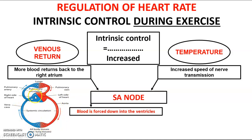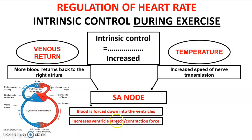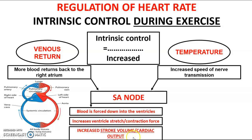To summarise: increased venous return means more blood returns to the right atrium; this increases the firing rate of the SA node; blood is forced down to the ventricles via atrial systole; this causes increased ventricular stretch and increased ventricular contraction force, leading to increased stroke volume and cardiac output. We regulate heart rate three ways during exercise: neural control, hormonal control, and intrinsic control. Make sure you have good notes on all three.